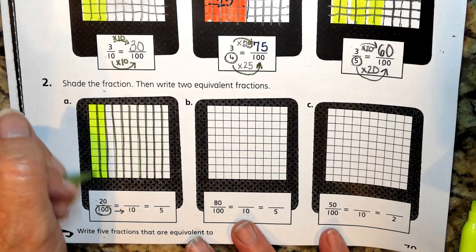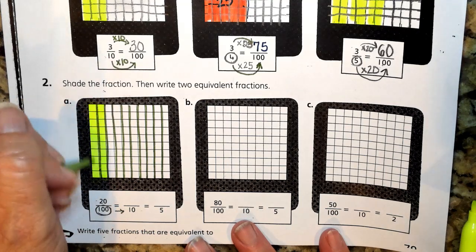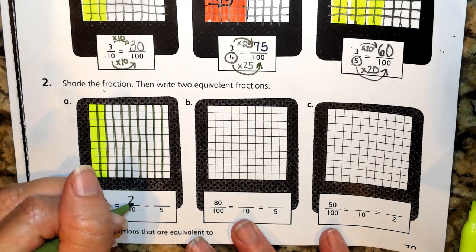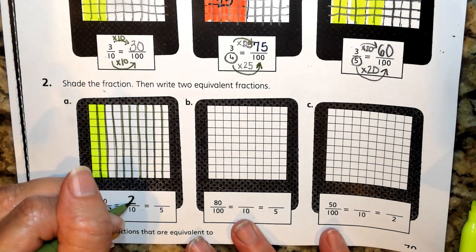So now we're just looking at 2 tenths, because we have 1 tenth and 2 tenths. So record your 2 tenths as your numerator.